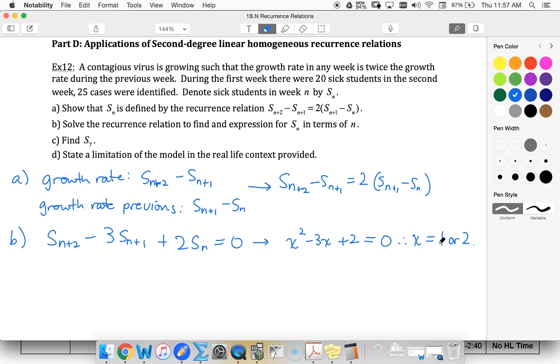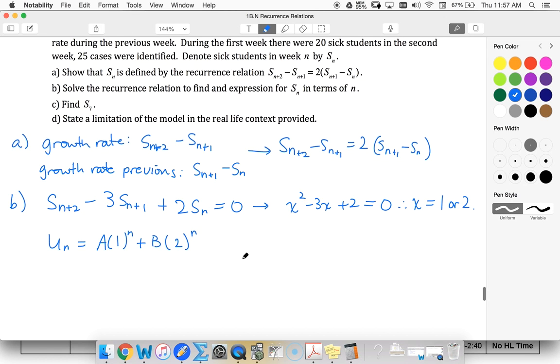Two distinct roots. That tells me I'm going to use the general form UN equals A times one to the N plus B times two to the N. Subbing in my initial conditions, we know that S sub one is 20, S sub two is 25. So 20 equals A plus two B, 25 is equal to A plus four B.